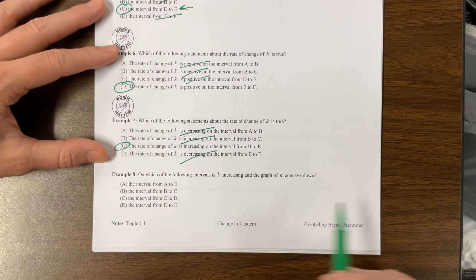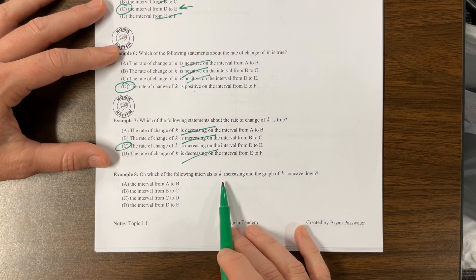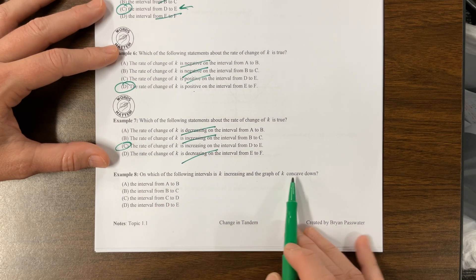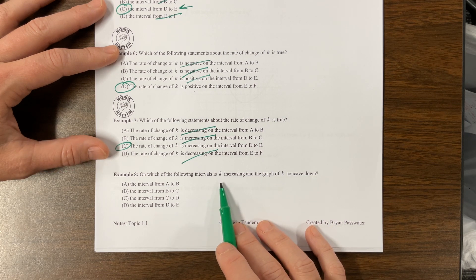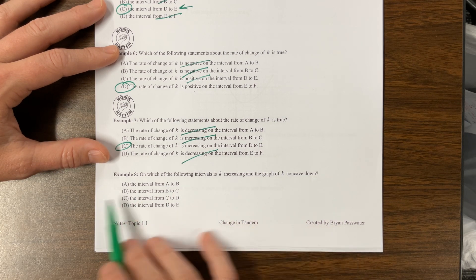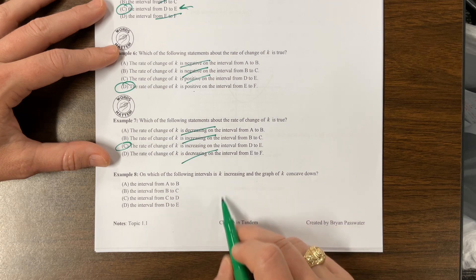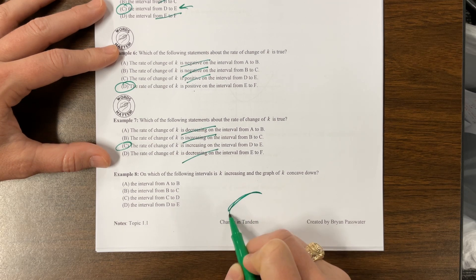And the last one. On which of the following intervals is K increasing and the graph is concave down? Okay. They didn't talk about the rate of change in this problem. So we want to be increasing and concave down. We're going to look something like this.